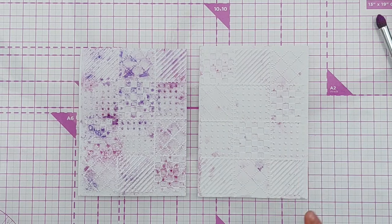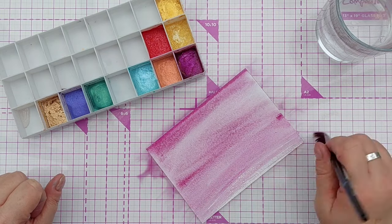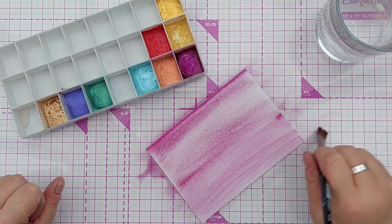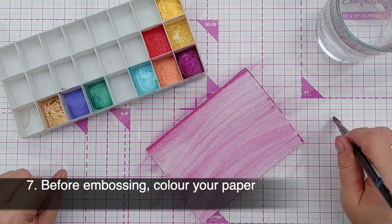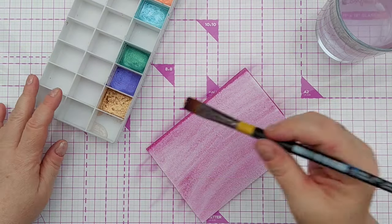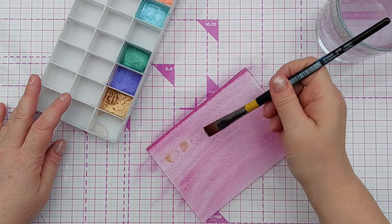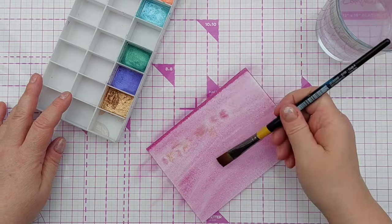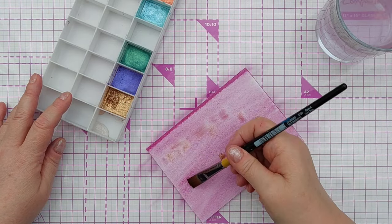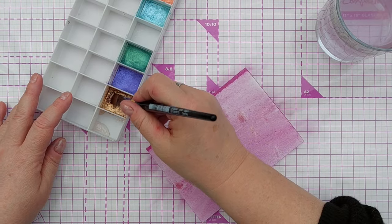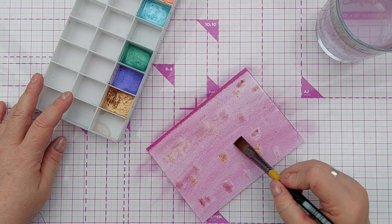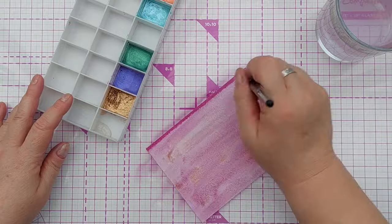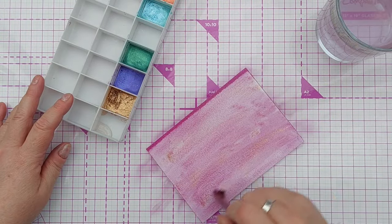Another way to use your embossing folders is to simply color some card with your pigment powders, dry it, and then run it through your die cutting machine with your embossing folder. So these are paints that I made with my various pigment powders. There is a video, the first one in the series perhaps, in which I talk about how to make and use paints from pigment powders.